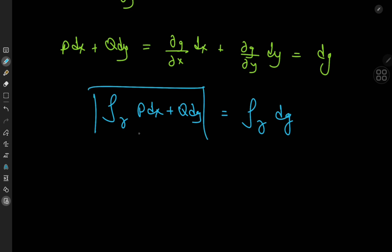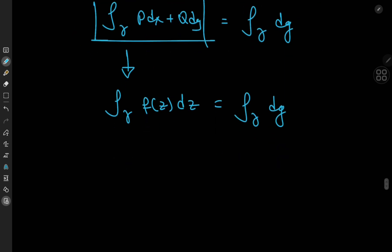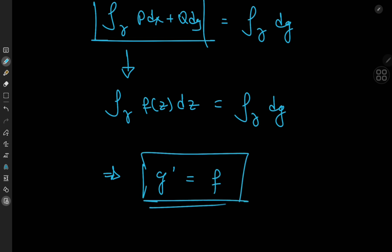We know this integral can be expressed as the integral over gamma of a continuous complex-valued function f(z), and that means we have this equality — valid for any contour in the domain d — implying that the derivative of g equals f. So indeed, the function f has a primitive.